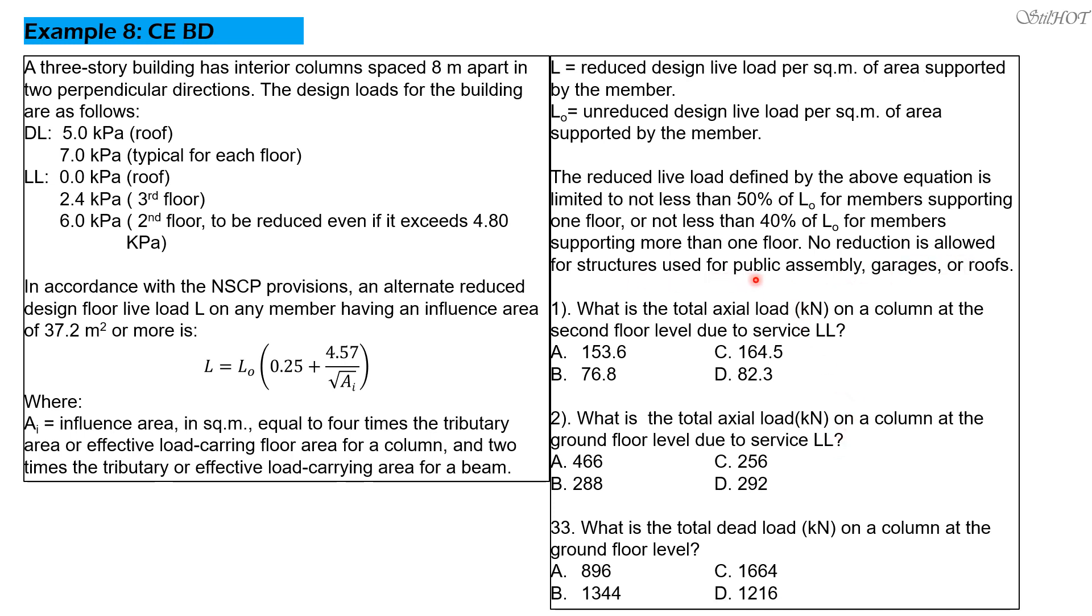No reduction is allowed for structures used for public assembly, garages, or roofs. The condition here which is the live load is also reduced when the load is exceeding 4.79 kPa is not mentioned here, and that is intentionally done so that all these live loads here can be reduced.